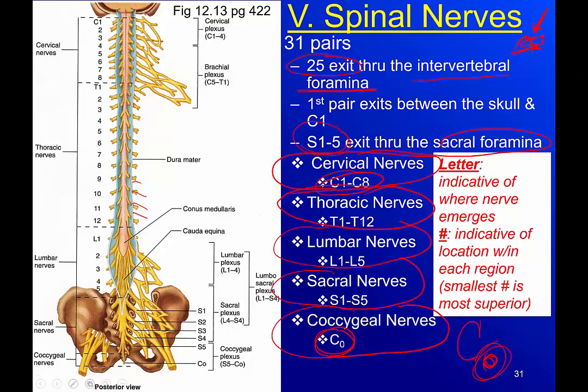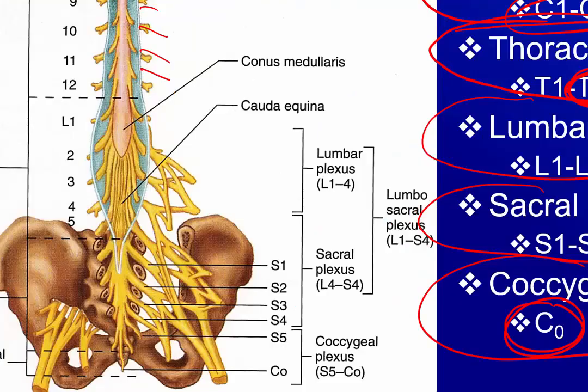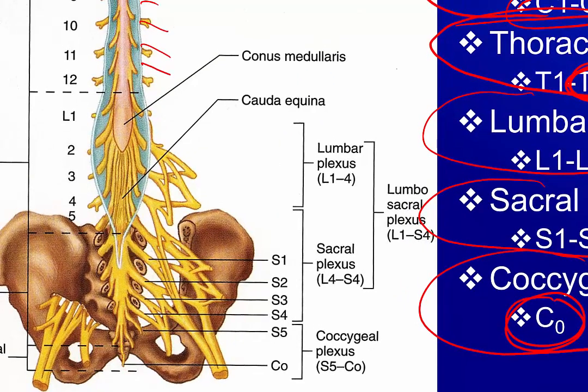If you can remember breakfast, lunch, dinner, snack, you can remember how many nerves there are. Breakfast at 8 o'clock — eight cervical nerves. Lunch at 12 — 12 thoracic nerves. Dinner at 5 — five lumbar nerves. For lab specifically, the sacral pictures show only four, so think of a snack at 4 o'clock before dinner at 5. In reality it's five, and then the coccygeal you can't mistake because it's sitting right on the coccyx.